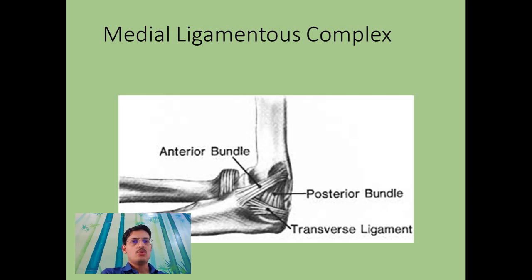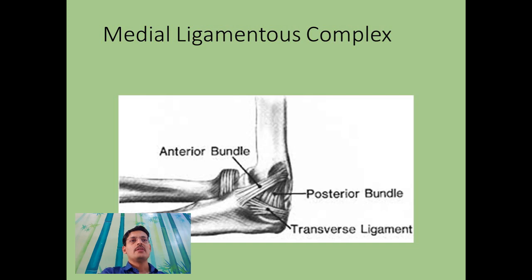The elbow has two groups of ligaments. One group is the medial ligamentous complex and the other is the lateral ligamentous complex. The medial ligamentous complex is a stronger and stouter ligament complex compared to the lateral ligamentous complex. It is formed by the anterior bundle, which is the main bundle, and the posterior bundle. The posterior bundle is taut in flexion, while the anterior bundle is taut in both extension and flexion.